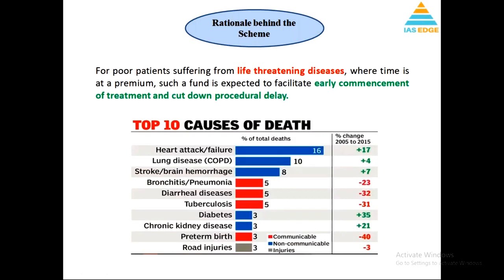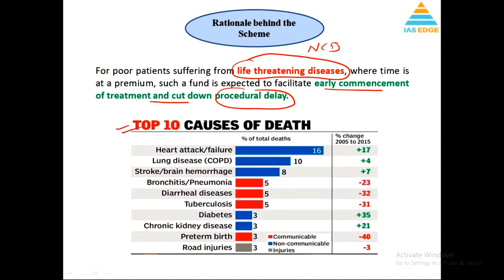Life-threatening diseases in India, especially non-communicable diseases (NCDs), have a huge outreach in terms of the population. People below the poverty line especially need medical treatment because they do not have access to resources and money. Also, not every government hospital is equipped to handle all conditions.